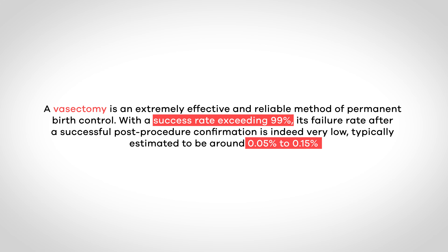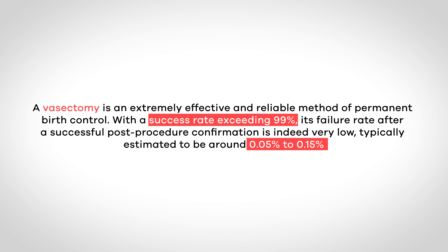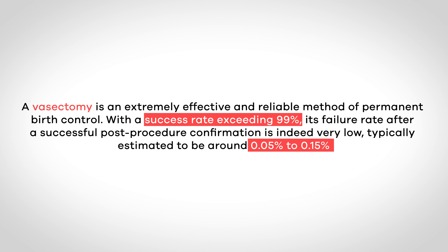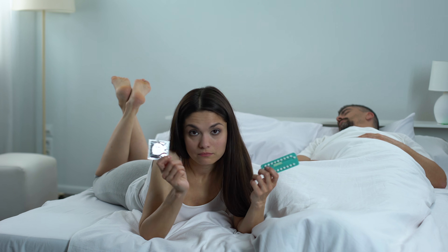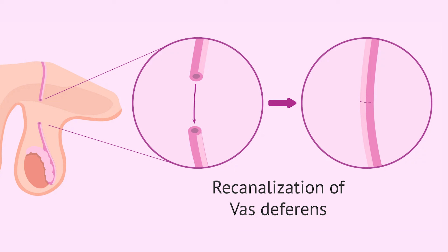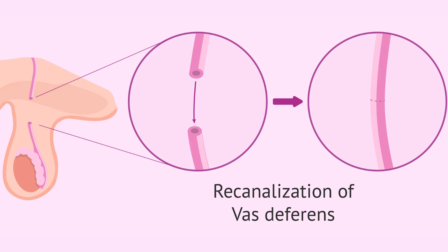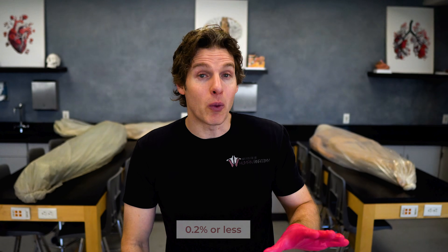How effective is this procedure? It's one of the most reliable forms of birth control out there — over 99% effective once you've cleared that post-procedure semen analysis. We're talking failure rates as low as 0.05 to 0.15% after confirmation, making it much more dependable than condoms or even some hormonal methods. Nobody says 100% because there's a tiny chance of re-canalization, where the ends of the vas deferens somehow reconnect and let sperm cells sneak through. Re-canalization is so rare at 0.2% or less, and it's even lower if your surgeon uses cauterization and fascial interposition.